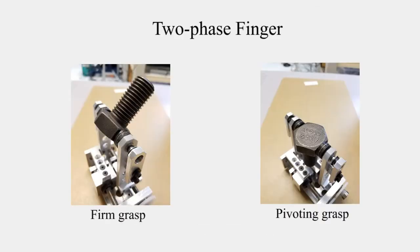We verify our method in experiments with several objects. To implement the two motion primitives, we build two fingertips that can either grasp firmly or rotate freely.